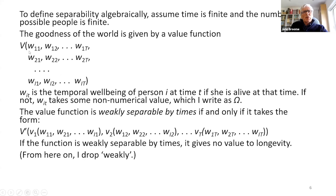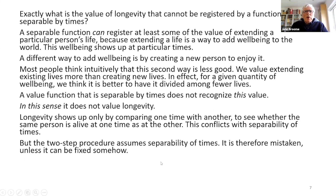We say the value function is weakly separable by times if and only if it takes a particular form: there's a value of the world at the first time depending on everybody's Ws at that time, a value at the second time, and so on through to the last time. If you can do the valuation by first valuing each time and then putting them together in some way to get an overall valuation, that is the assumption of separability by times. This is the function that gives no value to longevity as I've just explained.